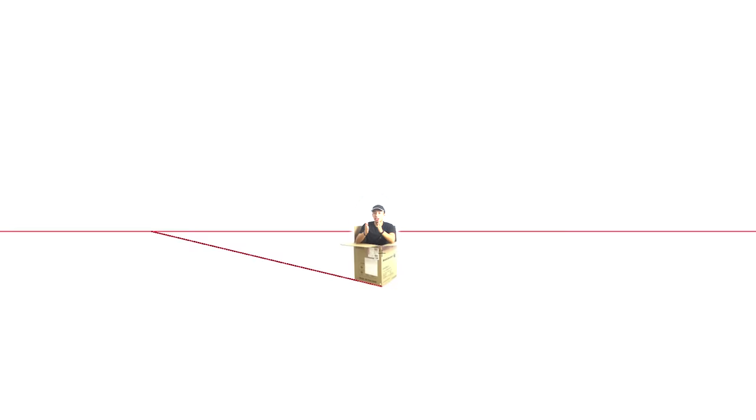Then there are the two-point perspectives. These are often used to represent exterior views of a house or structure and are characterized by having two vanishing points on the opposing sides of the horizon line.